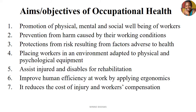What are the aims and objectives of occupational health? The occupational health and safety specialty mainly focuses on promoting the physical, mental and social well-being of workers or employees. They also work to prevent employees from harm caused by working conditions or the working environment. Occupational health also provides protection from risks resulting from factors that are adverse to our health — such as industries that have fumes or chemicals as part of their waste materials. Another aim is placing workers in an environment adapted to their physical and psychological capabilities.